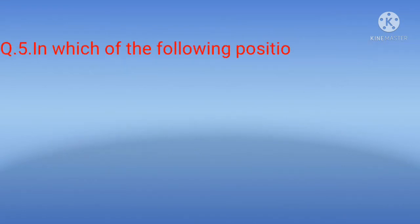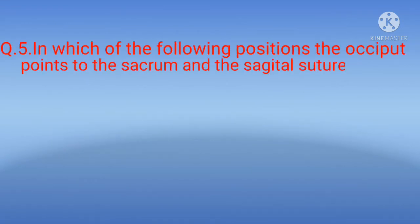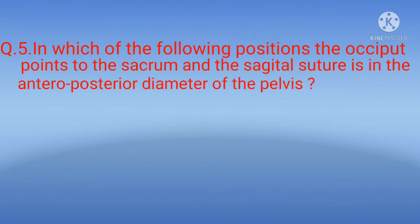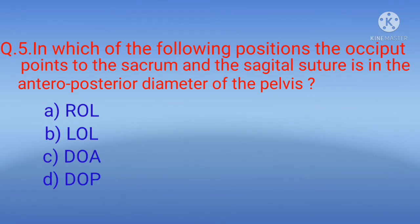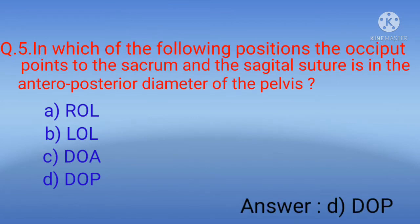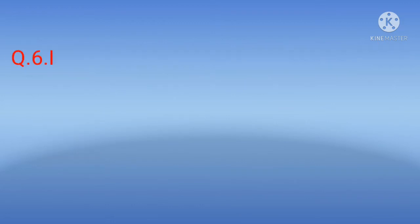Question 5: In which of the following positions does the occiput point to the sacrum and the sagittal suture is in the anteroposterior diameter of the pelvis? Options: A) ROL, B) LOL, C) DOA, D) DOP. The correct option is D) DOP — direct occipital posterior. ROL means right occipital lateral; LOL means left occipital lateral; DOA means direct occipital anterior.